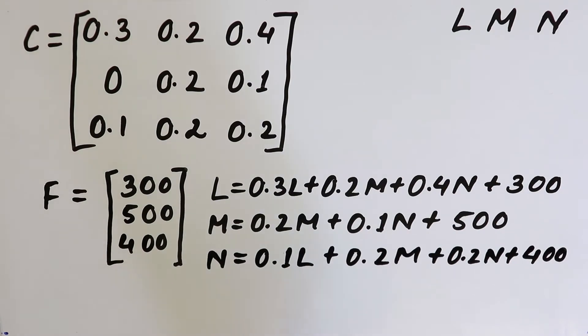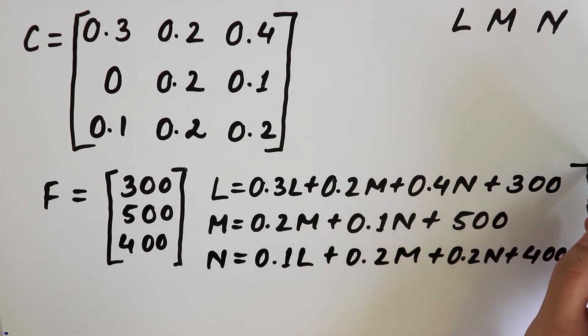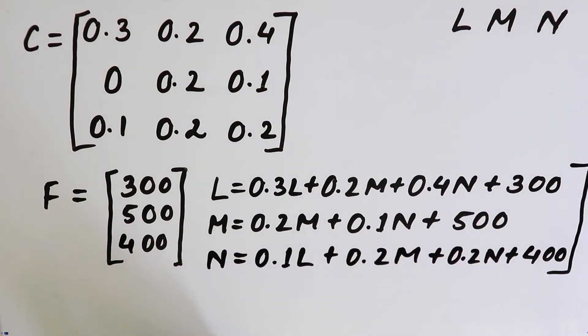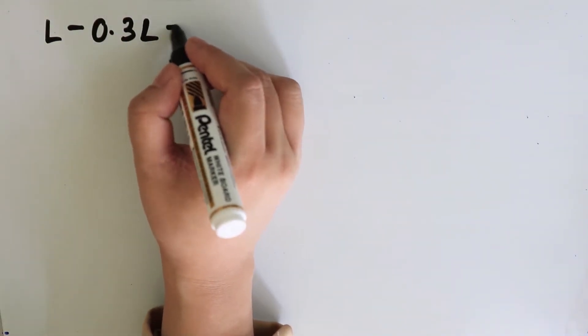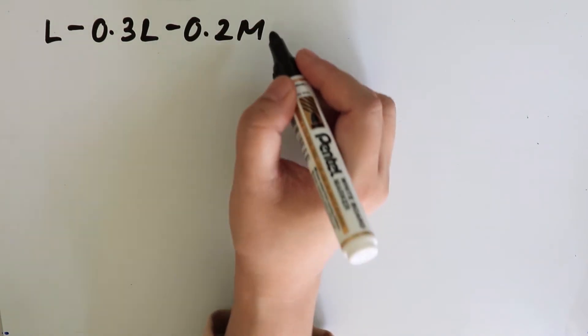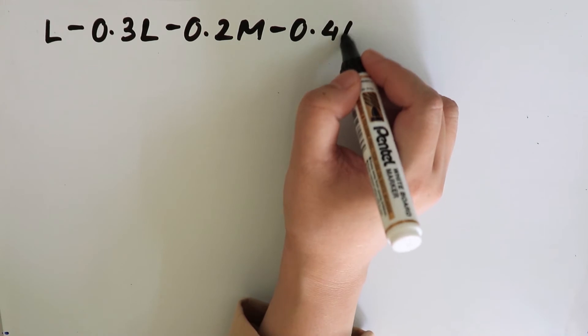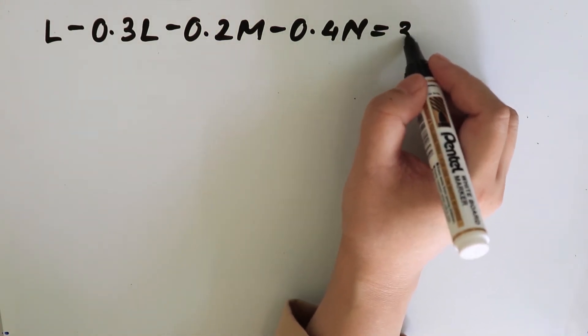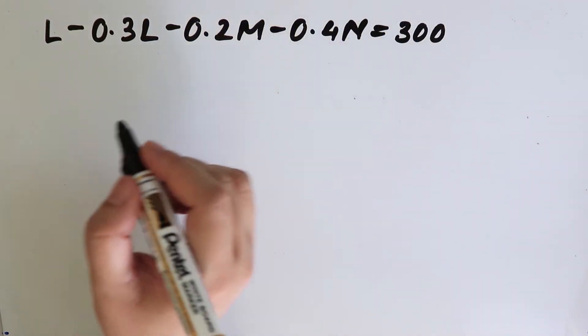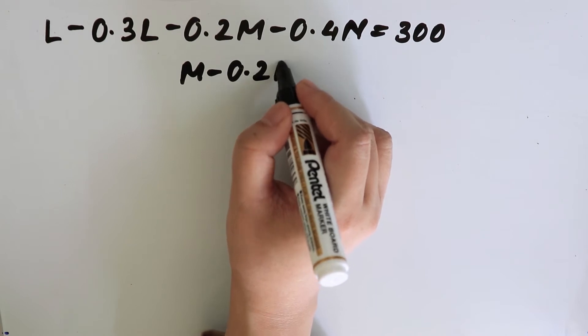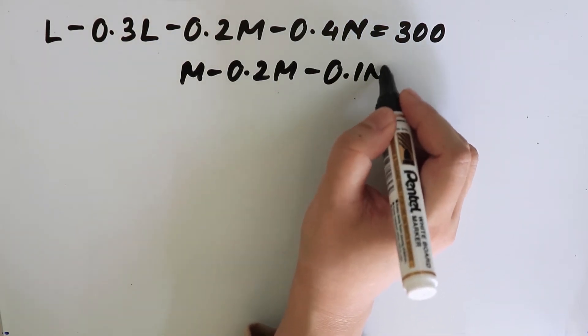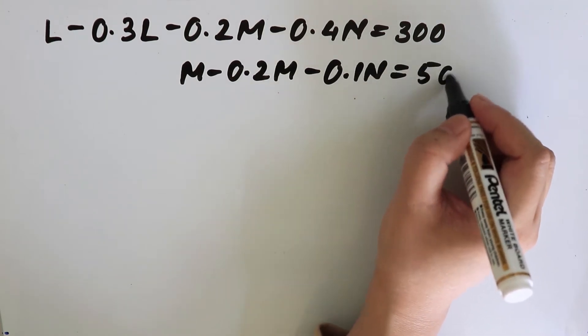We therefore have a system of simultaneous equations. Simplifying these three equations we can get L minus 0.3L minus 0.2M minus 0.4N is equal to 300. Then M minus 0.2M minus 0.1N will be equal to 500.